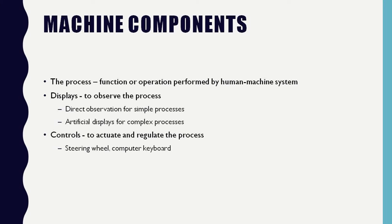As for the machine component, the machine in a human-machine system can range from a simple hand tool to sophisticated equipment. The typical ergonomic model is one in which the interaction between human and machine is directly coupled — for example, a person driving a car continuously steers using the steering wheel, controls speed using the throttle, and receives feedback such as speed, engine RPM, and direction.